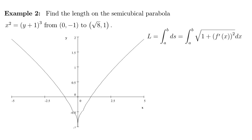In our next example, we want to find the length of something called a semi-cubical parabola. The equation we're given is x squared equals y plus 1 cubed. The parabolic part comes from the x squared, and the semi-cubical comes from the cube on the y plus 1. We're going to do it from the point (0, -1) to the point (√8, 1).